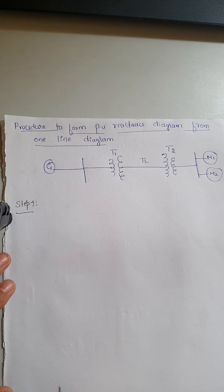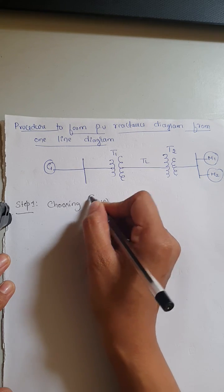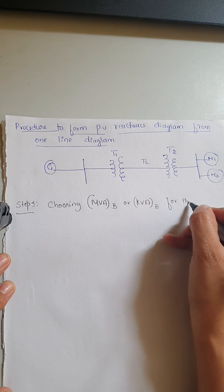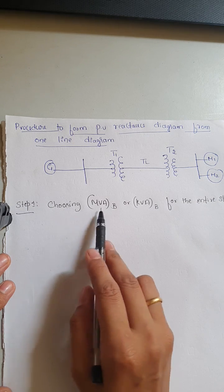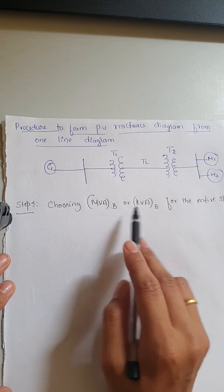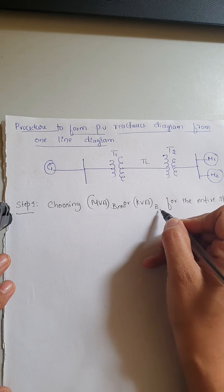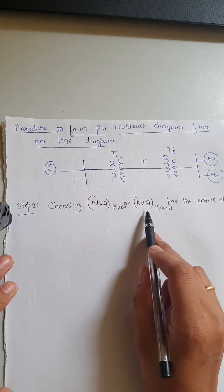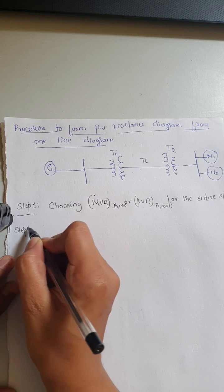Step one is choosing a base power — that is KVA base or MVA base — for the entire system. Once you choose the MVA or KVA value, this will remain the same throughout the problem. You can also refer to this as MVA base new or KVA base new.